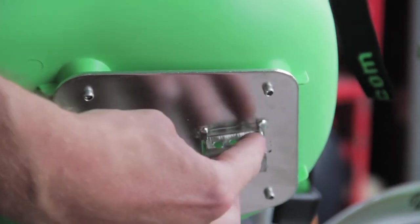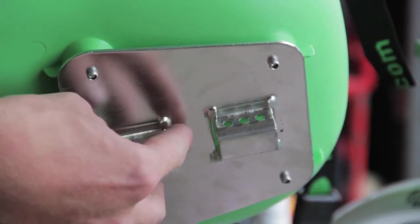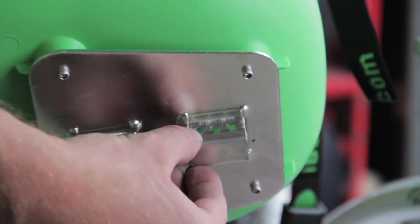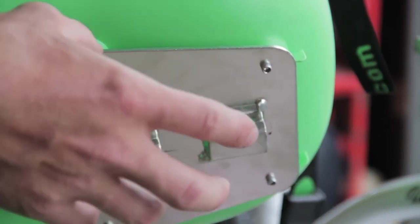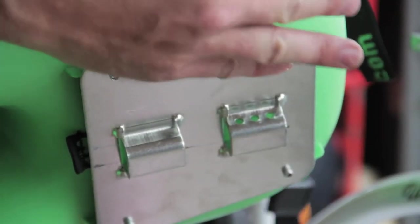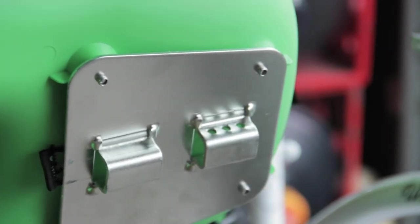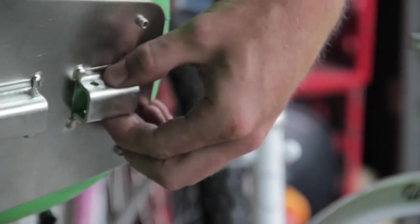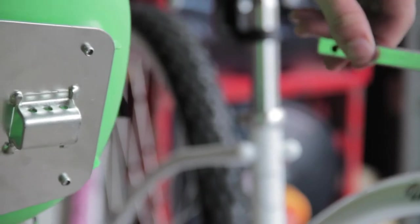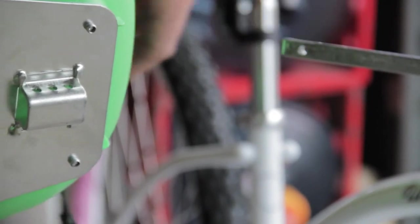So these three holes in the bottom bracket here will allow you to position the seat either further or closer to the handlebars or stem. So just take note of those holes. And the pin will slide through these holes or one of these holes and this hole here.